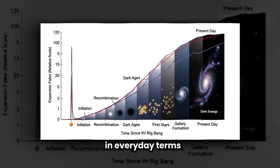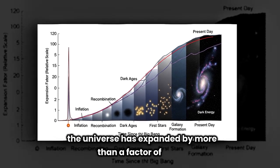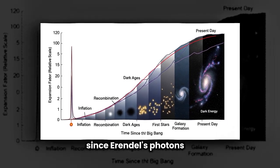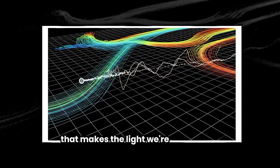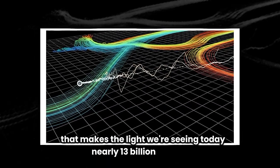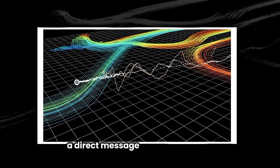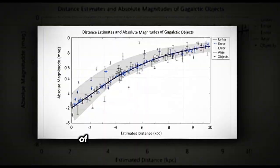In everyday terms, the universe has expanded by more than a factor of seven since Earendel's photons left. That makes the light we're seeing today nearly 13 billion years old. A direct message from cosmic dawn.